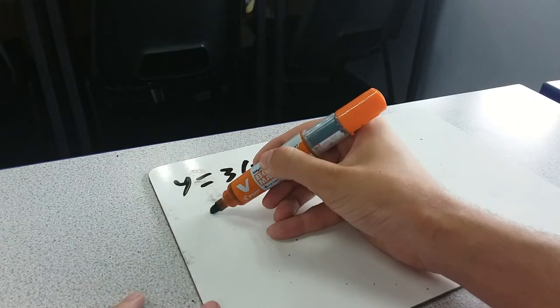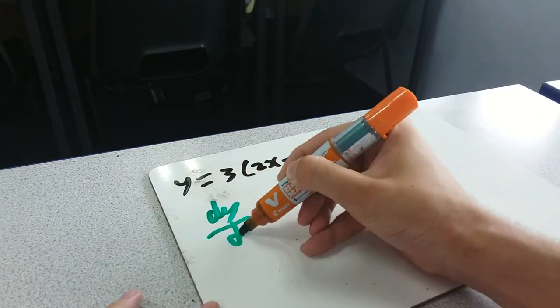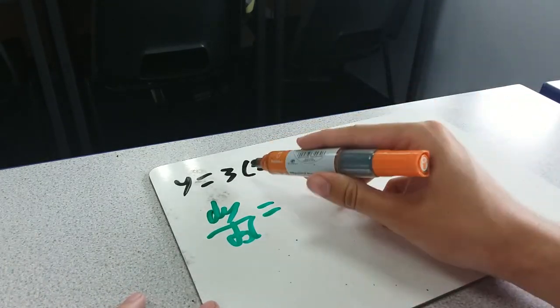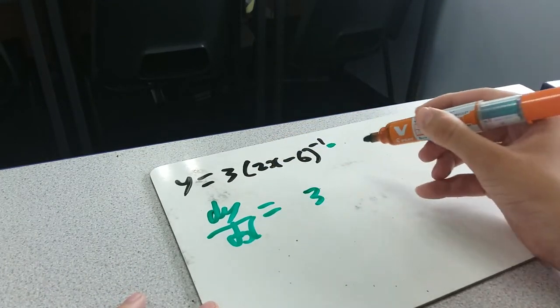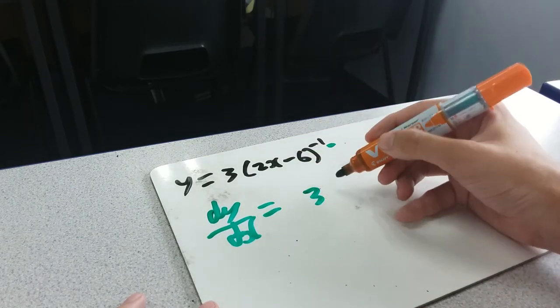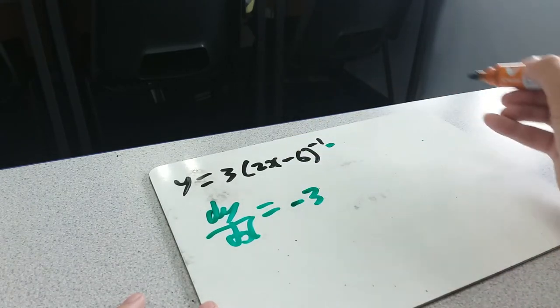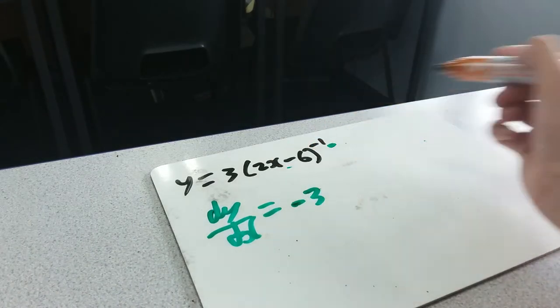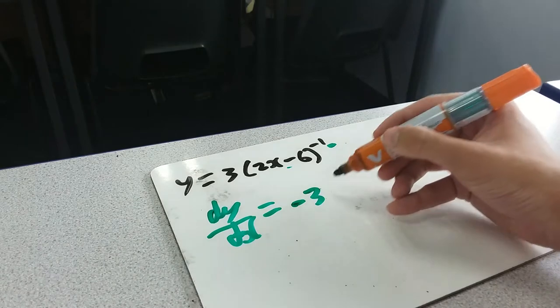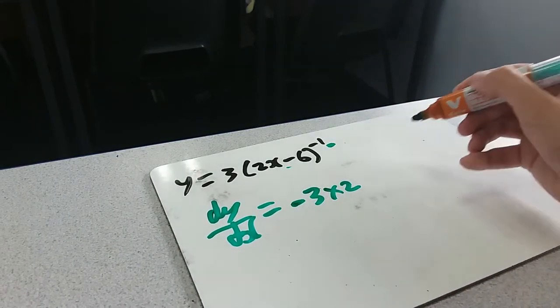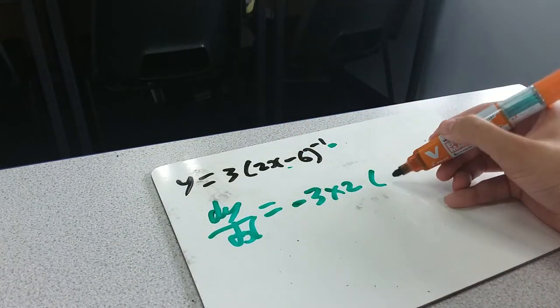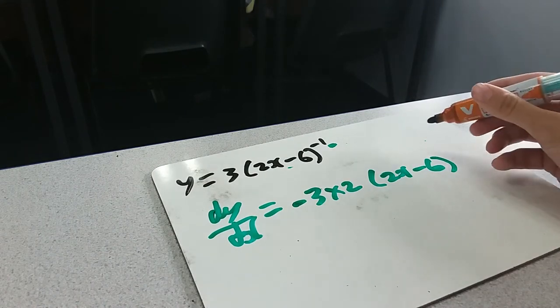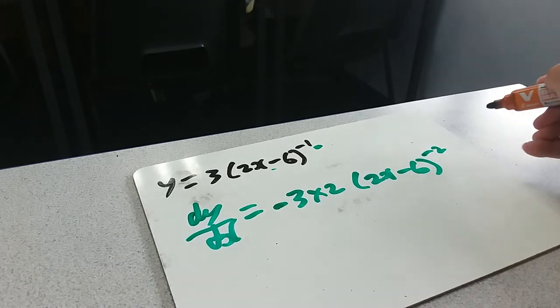So, dy dx equals, we had a factor of 3, so that's still going to be there. We times down by the power, so we times by minus 1. I'm just going to put the minus in front like that. Then we times by the derivative of what's inside, well the inside it just differentiates to 2, so we get an extra times by 2. And then the whole thing, 2x minus 6, is still there. And it's to the power where we take one away from the power, so that'd be minus 2.